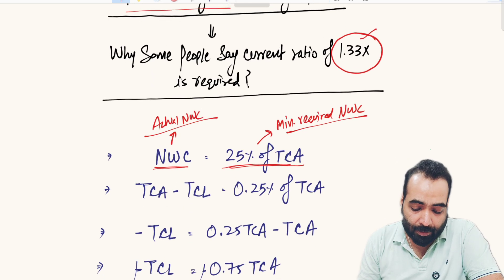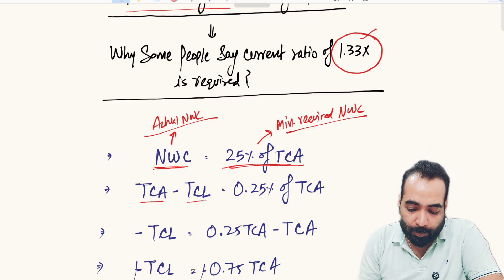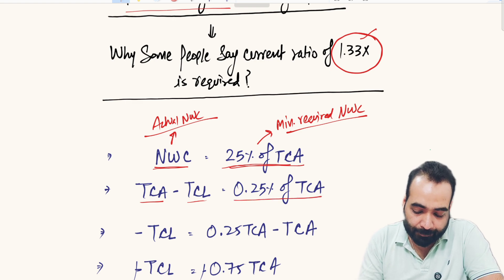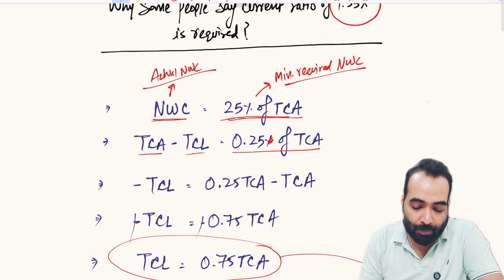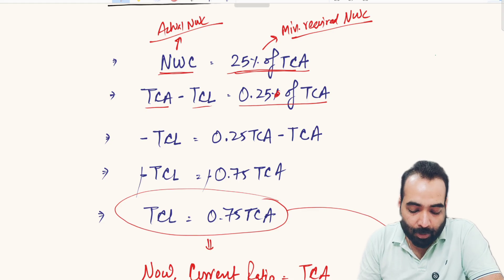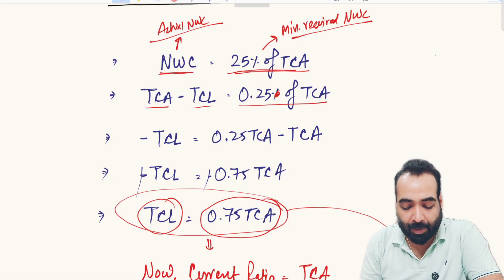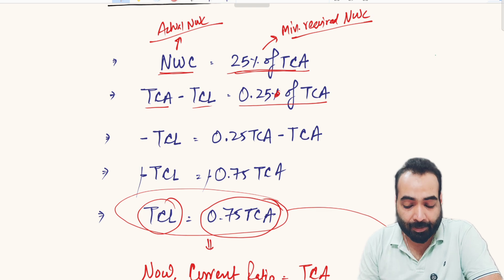NWC is total current assets minus total current liabilities, which we can write as 0.25 of total current assets. Resolving this mathematically: Total Current Assets − Total Current Liabilities = 0.25 × TCA, which gives us Total Current Liabilities = 0.75 of total current assets. This is the key mathematical representation.